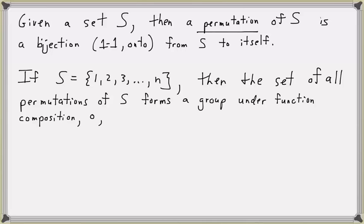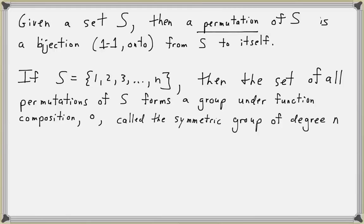We'll denote the composition by normal notation. This group is called the symmetric group of degree N. In this particular case, when we're permuting the integers one through N, we denote the symmetric group of degree N by S sub N.